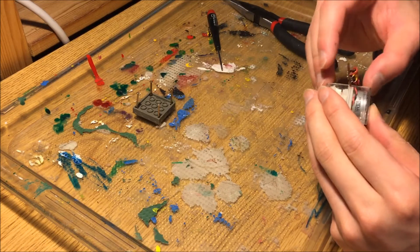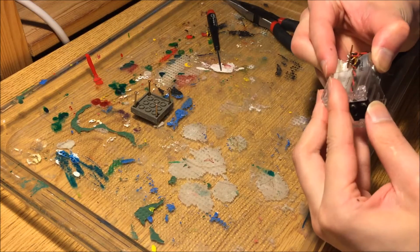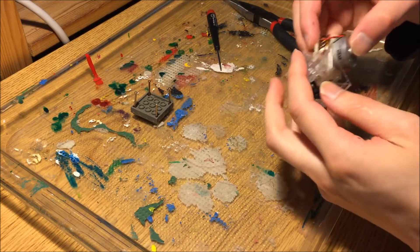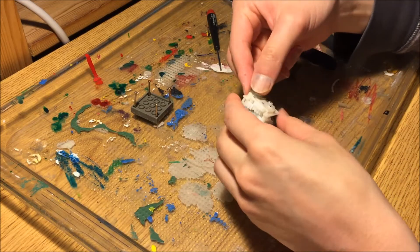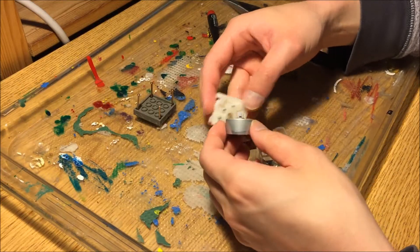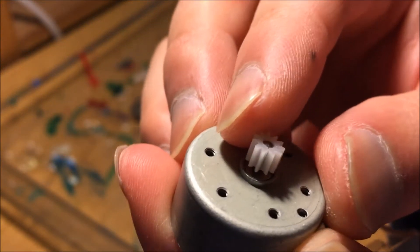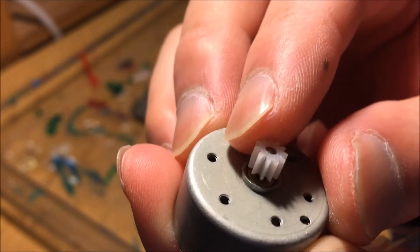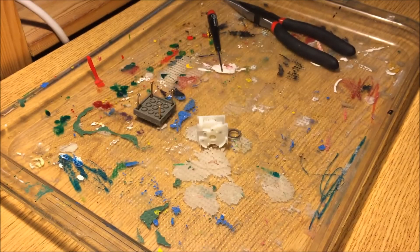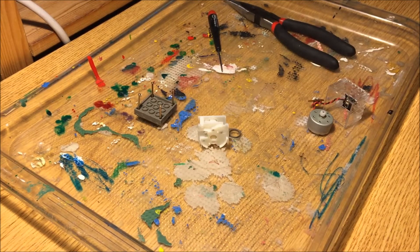The gearbox and motor come out together, but make sure to remove the PCB with the thermistor beforehand. Afterward the two separate easily. Now we can see the problem: the plastic pinion gear on the motor has cracked and it engages unevenly, causing it to click.